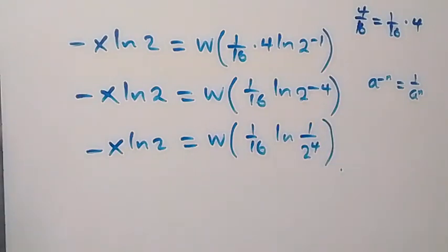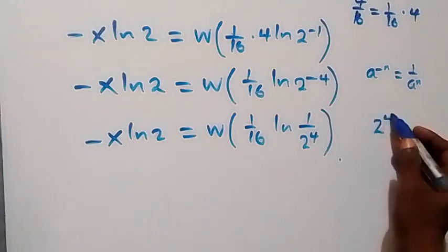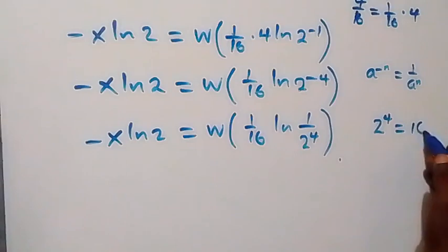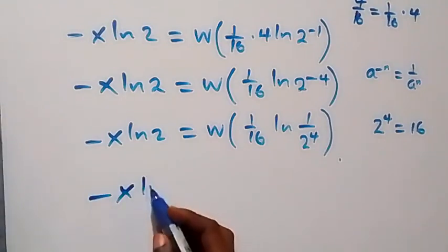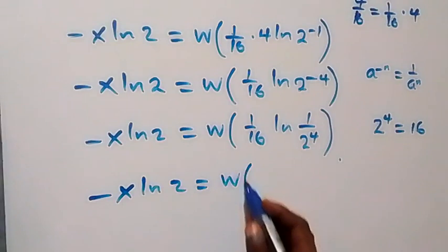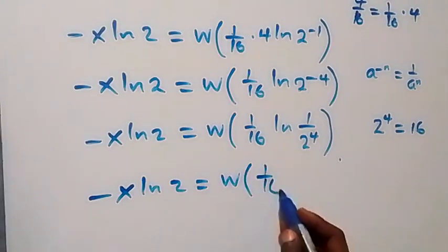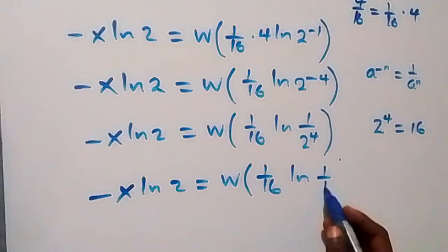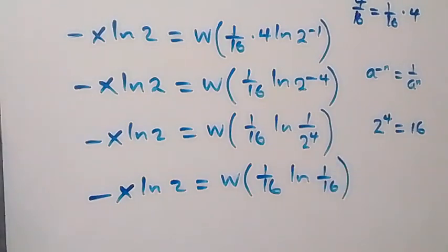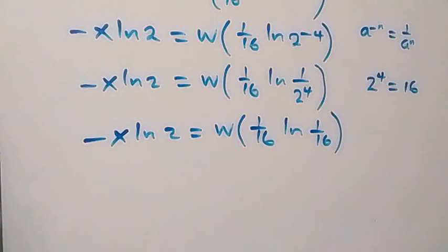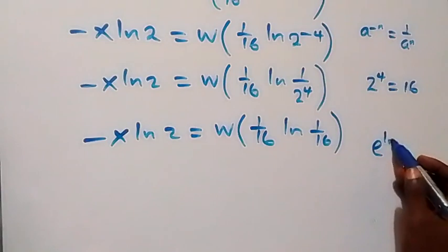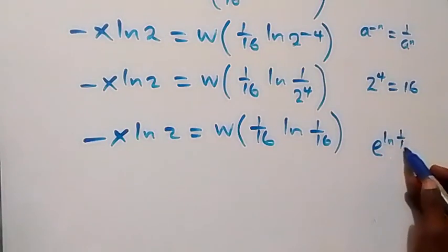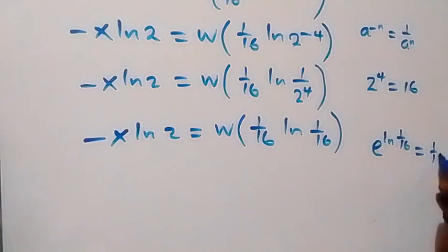Now 2 raised to power 4 means 2 multiplied by itself 4 times, which is 16. So 1 over 2 raised to power 4 is 1 over 16. Here we become minus x·ln2 equals W(1 over 16 · ln(1 over 16)), and from here we can also write 1 over 16 as e^(ln(1/16)), which is the same thing as 1 over 16.